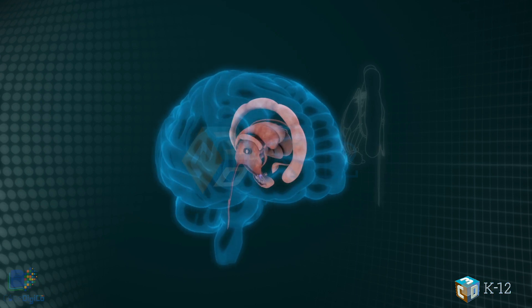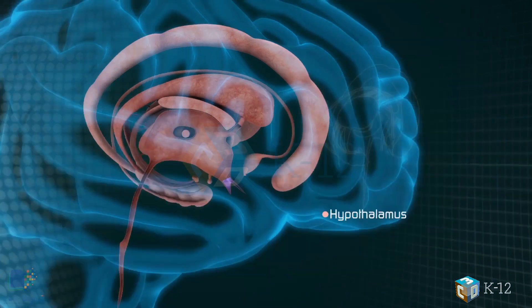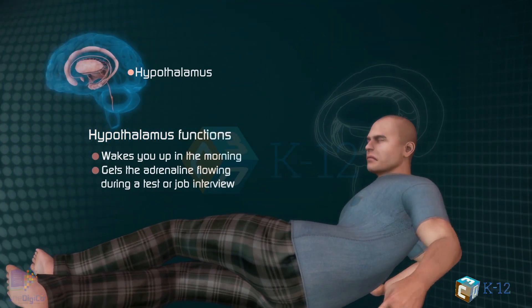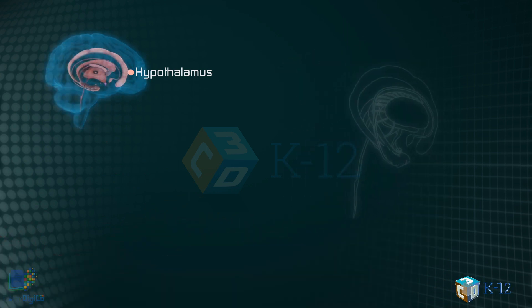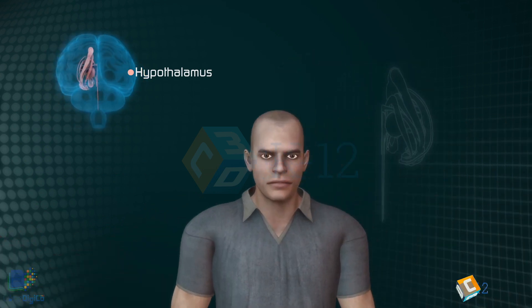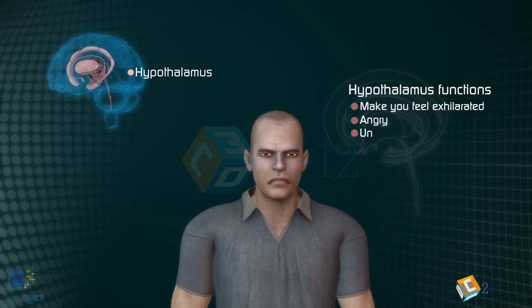The hypothalamus, about the size of a pearl, directs a multitude of important functions. It wakes you up in the morning and gets the adrenaline flowing during a test or job interview. The hypothalamus is also an important emotional center controlling the molecules that make you feel exhilarated, angry, or unhappy.